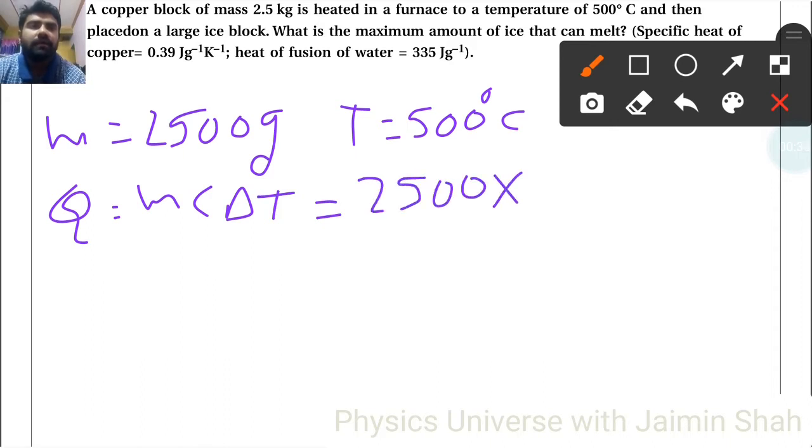The specific heat of copper is 0.39 and temperature is 500, right.